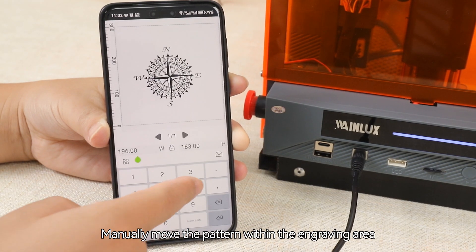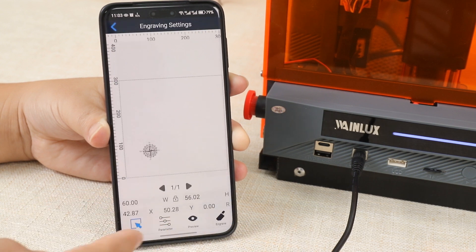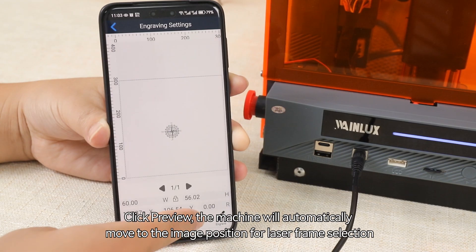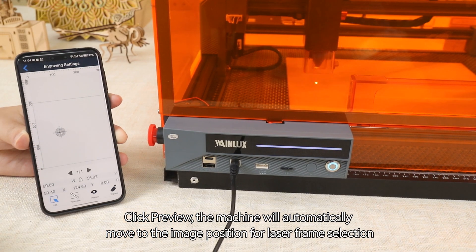Manually move the pattern within the engraving area. Click preview and the machine will automatically move to the image position for laser frame selection.